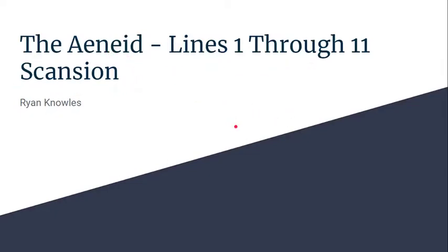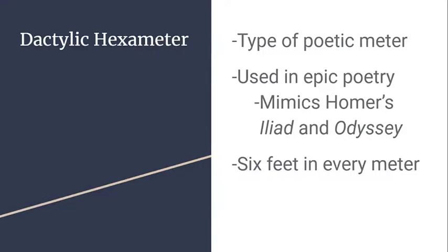Before I actually get to the Aeneid itself and start diving into the lines, I'm going to cover a couple of key terms you need to know to make sure you're doing your scansion right. The basic term for the type of poetry in the Aeneid is dactylic hexameter.